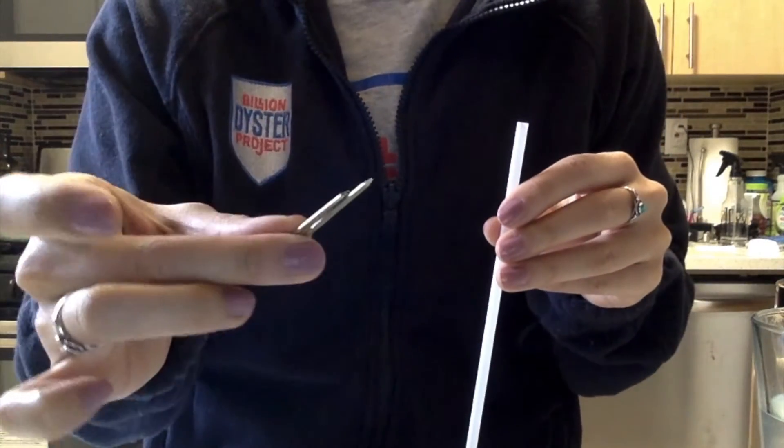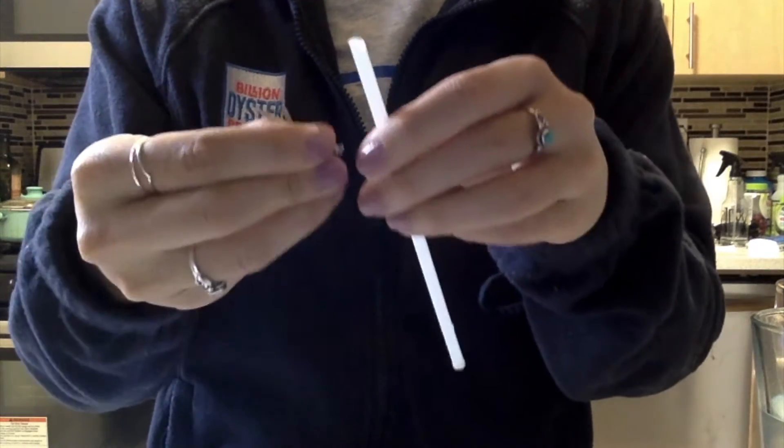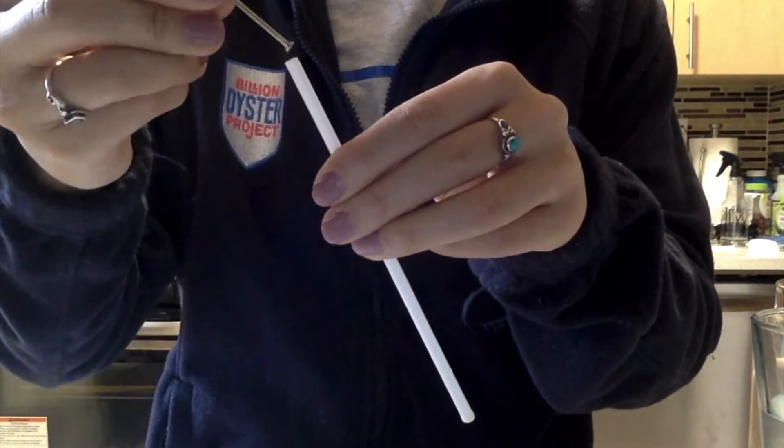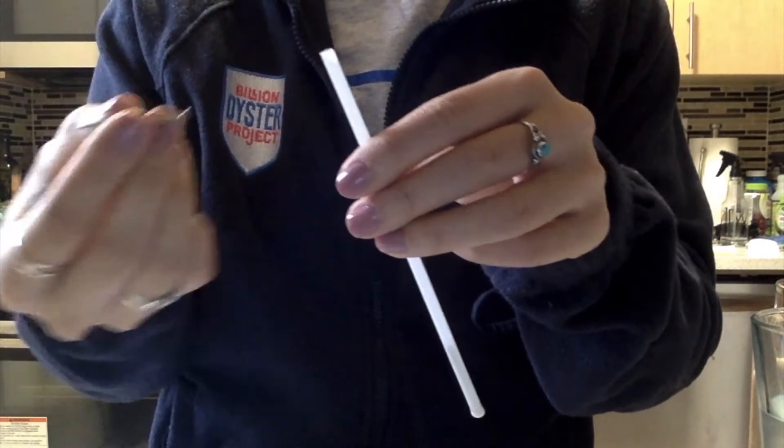Next, I'm going to take two metal nails and put them into the straw. The metal nails will help weigh down the bottom of the straw and keep your hydrometer in the water.